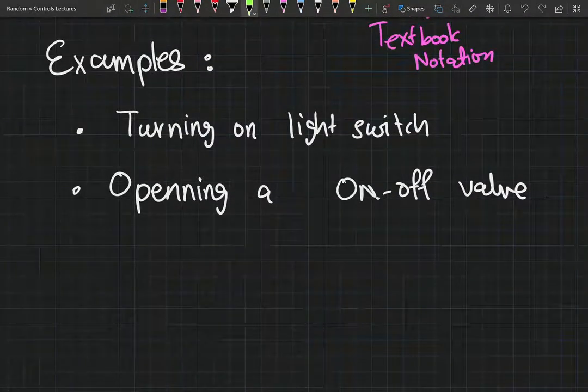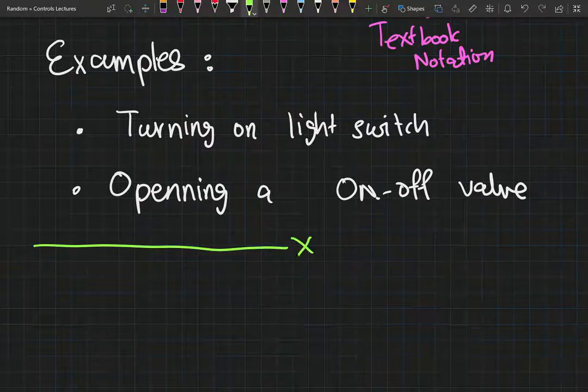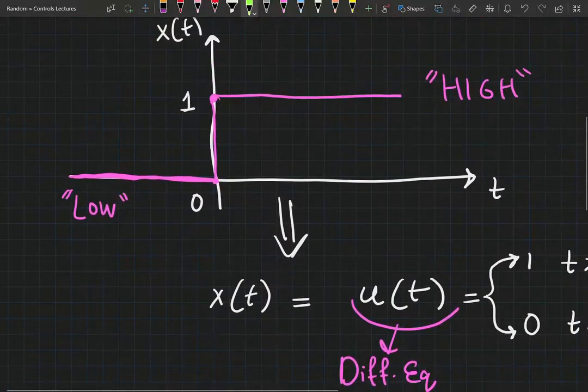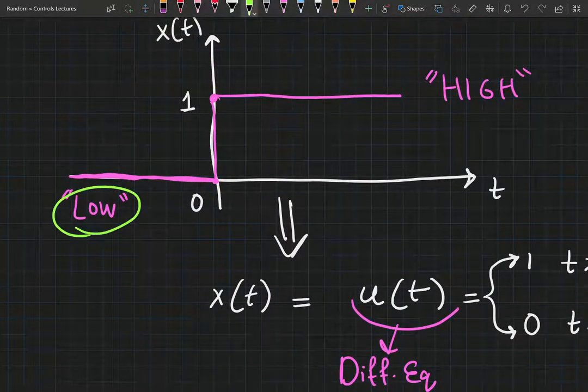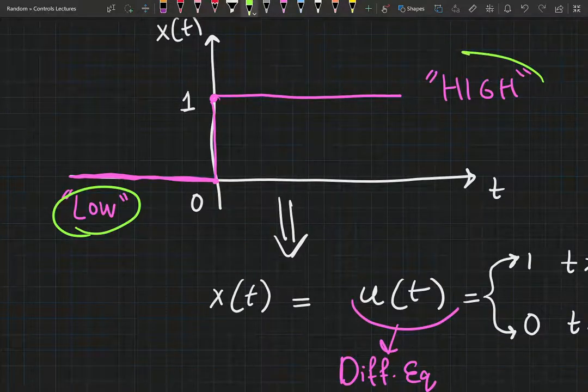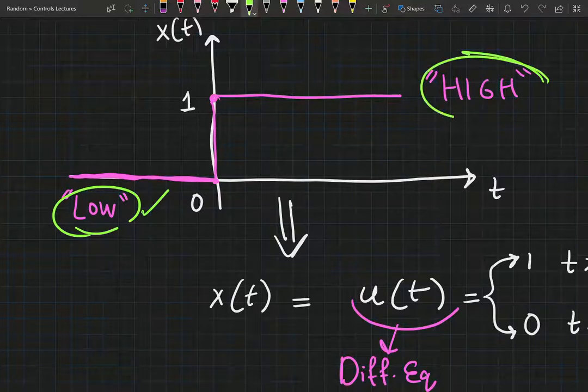Now, let me show you some examples. In most cases, you are going to have a high and you are going to have a low.